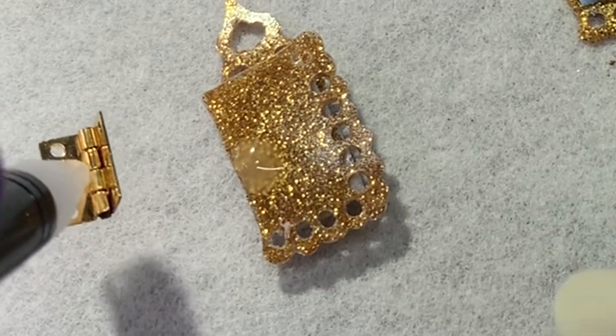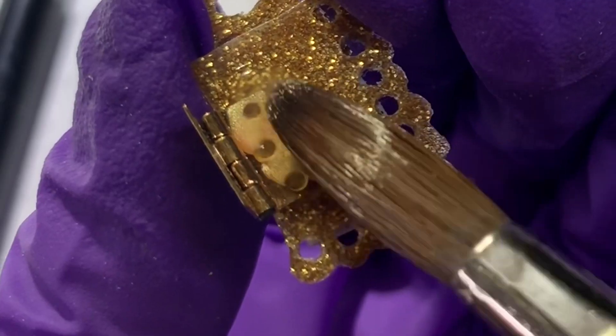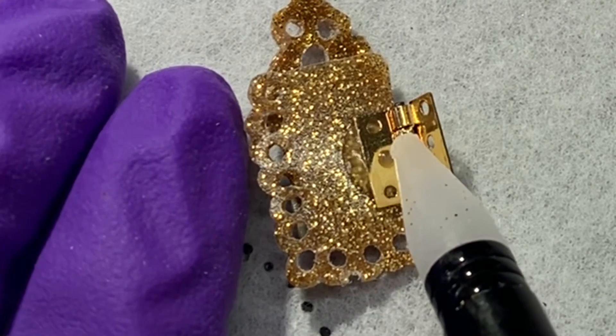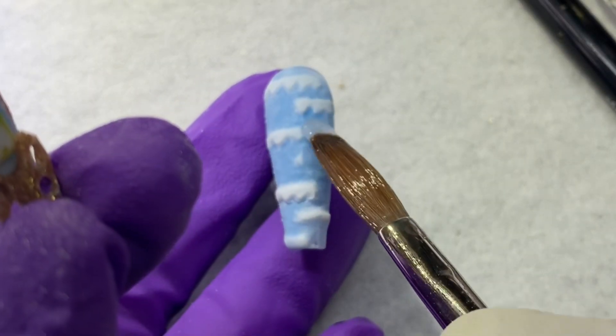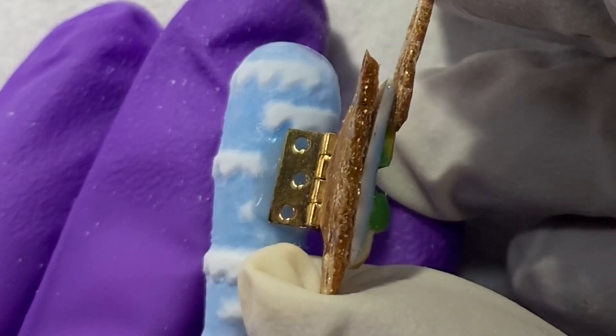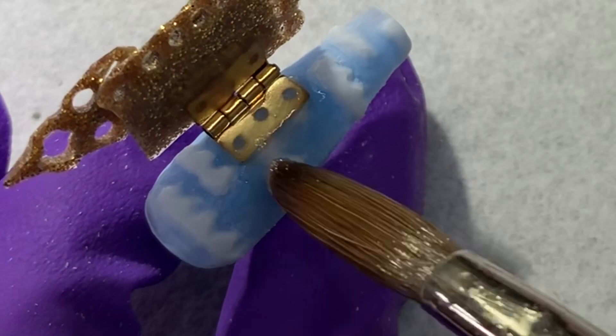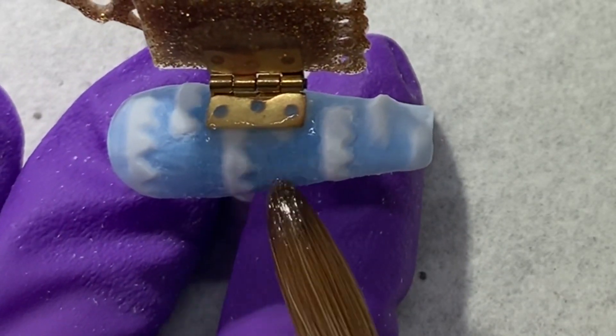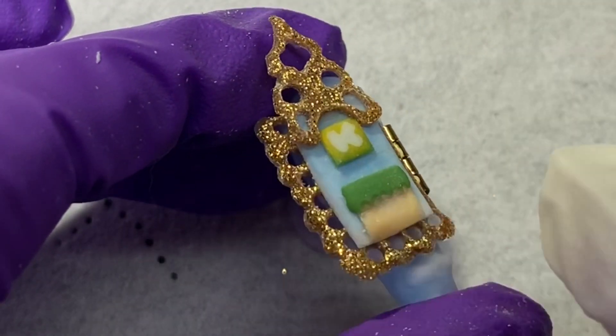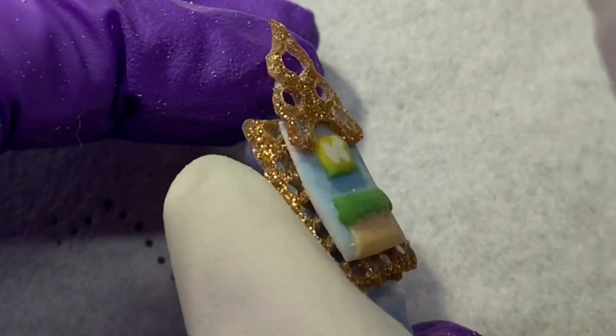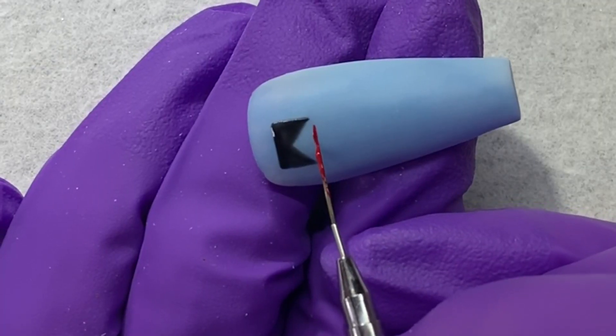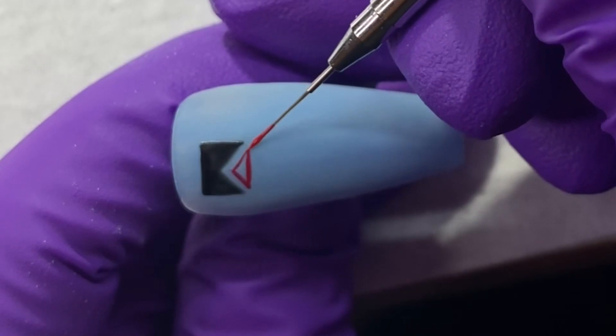Look at these cute little teeny tiny baby hinges. Using acrylic, you're going to want to place that to the back of your panel and also place it onto the nail and just hold it there until the acrylic hardens. It's like the cutest little tiny baby door ever.